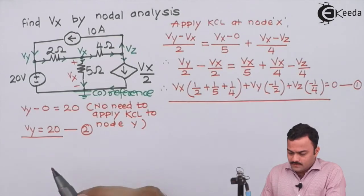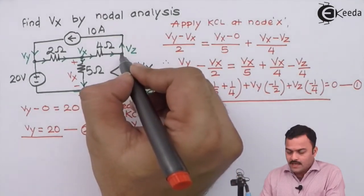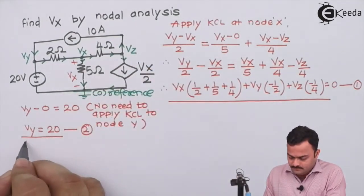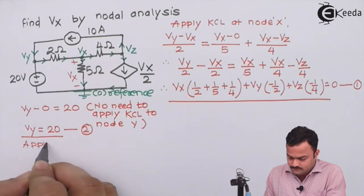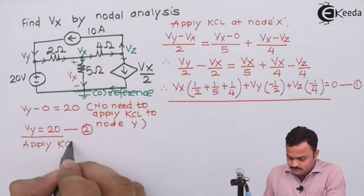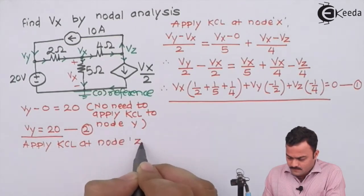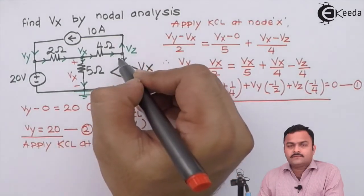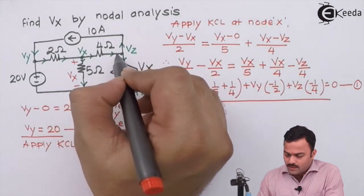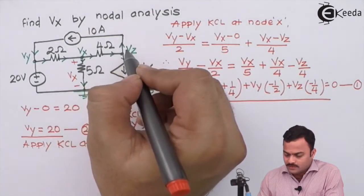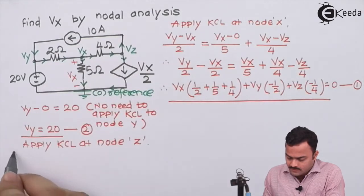This will give us an equation Vy as 20. We can consider this as equation number 2. Now let's apply KCL at node Z.